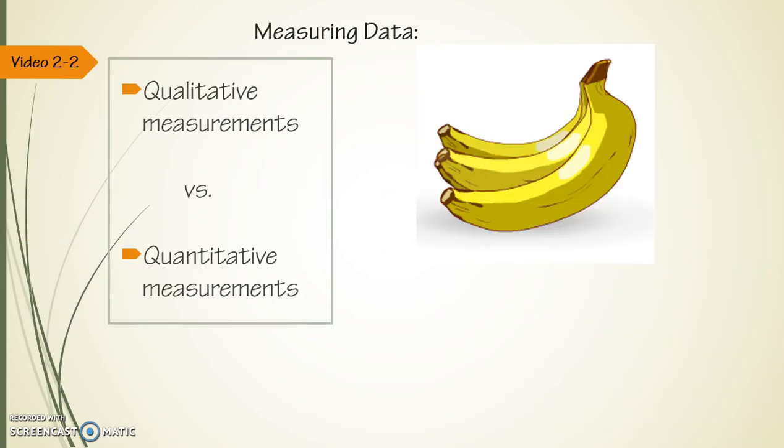Now there are two different types of ways or measurements that you could measure data with. A qualitative measurement which is a descriptive way of measuring it. Like, is it sunny outside? Is it cloudy? Take a pregnancy test - positive or negative? It's descriptive. A quantitative one actually gives you a quantity - a numerical value.